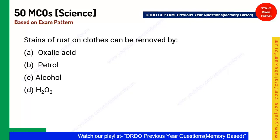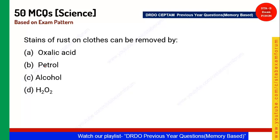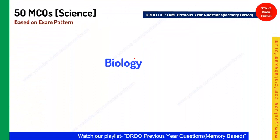Important question: Stains of rust on cloth can be removed by what? The answer is oxalic acid — not petroleum, alcohol, or H2O2. Oxalic acid is also found in tomatoes and spinach. That completes 10 chemistry questions; now let's move to biology.